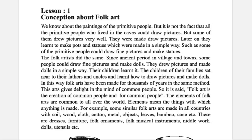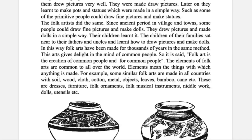Element means the things with which anything is made. For example, some similar folk arts are made in all countries with soil, wood, cloth, cotton, metal, bamboo, cane, etc. Those include dresses, furniture, folk ornaments, folk musical instruments, needlework, dolls, etc. It could be anything.